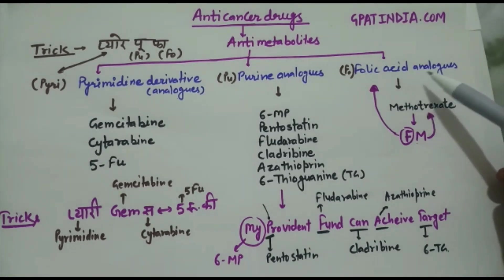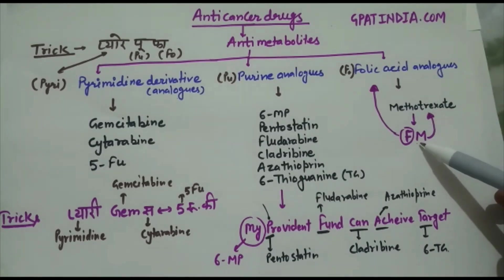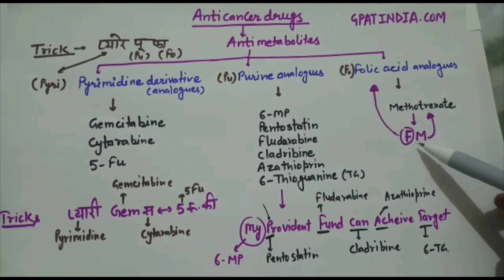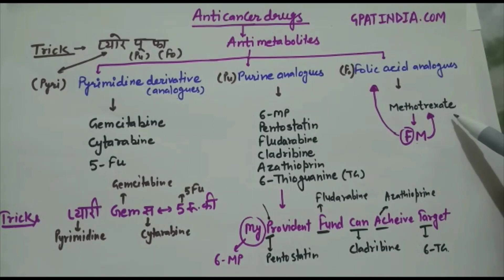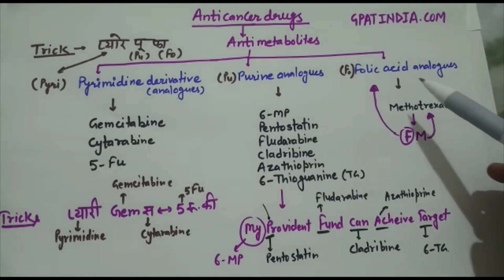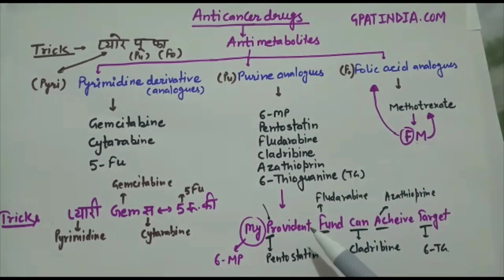Next we have folic acid analogs. The memory trick here is 'FM', like FM radio stations. F is equal to folic acid analogs and M is equal to methotrexate. This trick can be used to learn the anti-metabolites category drugs. Thank you.